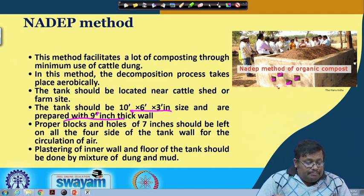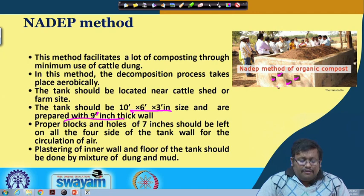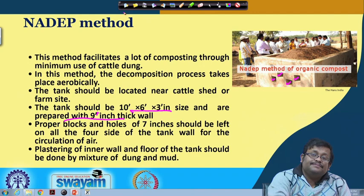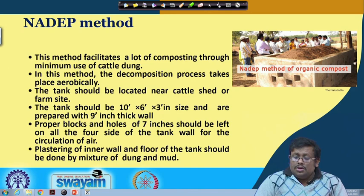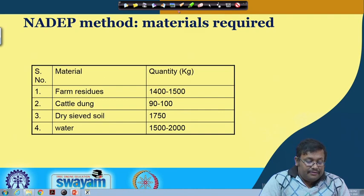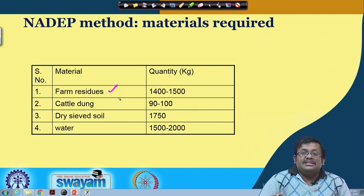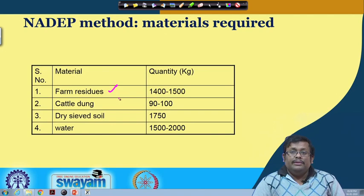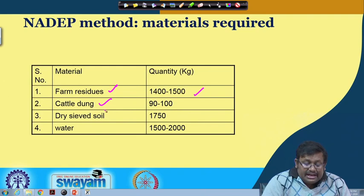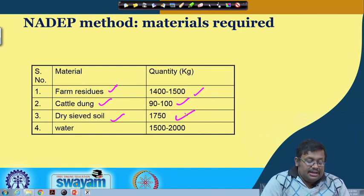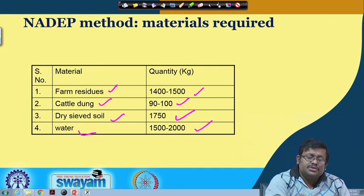The plastering of the inner wall and floors of the tank should be done with a mixture of dung and mud. This method was first demonstrated at JNKV in Indore. The materials required for NADEP compost are: 1,400 to 1,500 kg of farm residues, 90 to 100 kg of cattle dung, 7,850 kg of dry sieved soil, and 1,500 to 2,000 litres of water.